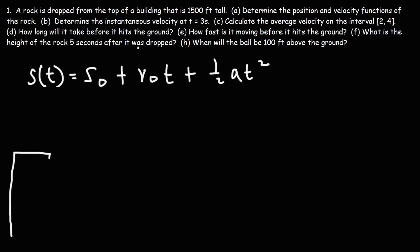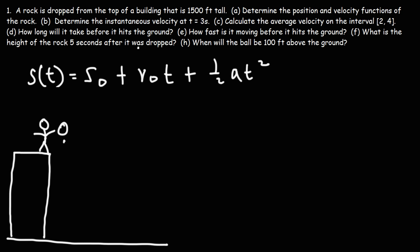Let's draw a picture. Here is the building, and a person drops a rock — it's going to fall down. In order to determine the position function, we need to figure out the initial height, which is the height of the building. So we replace s-initial with 1500. The rock was simply released from rest — it wasn't thrown up or down — so the initial velocity in the y direction is zero.